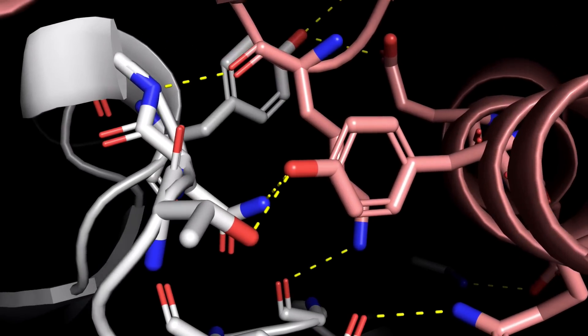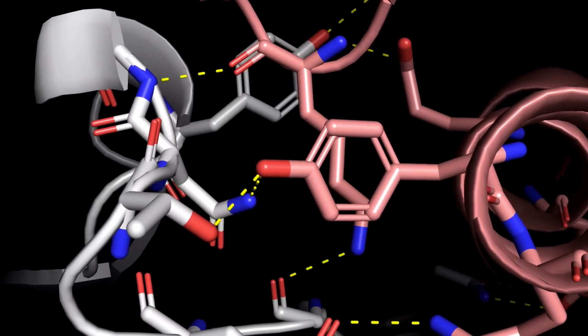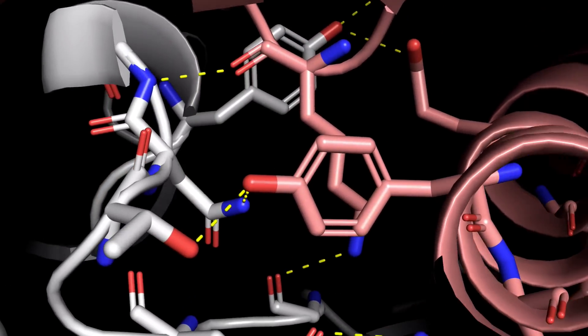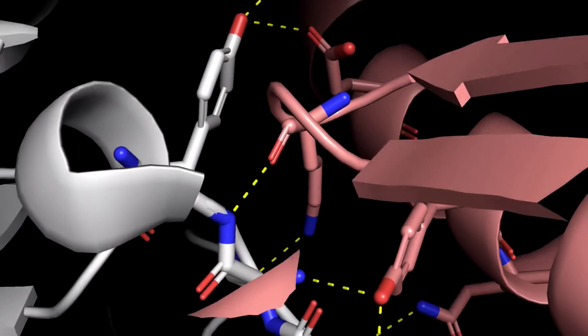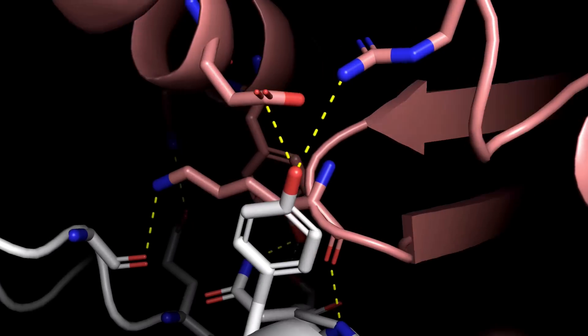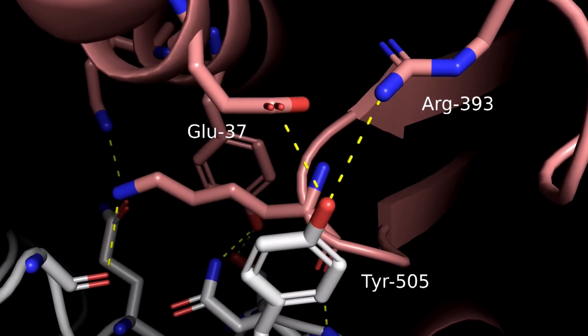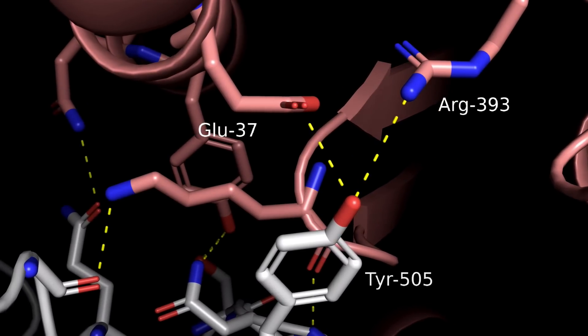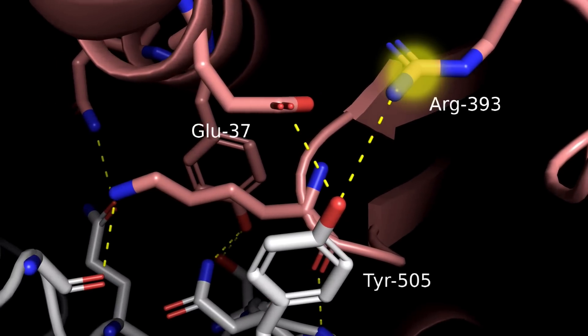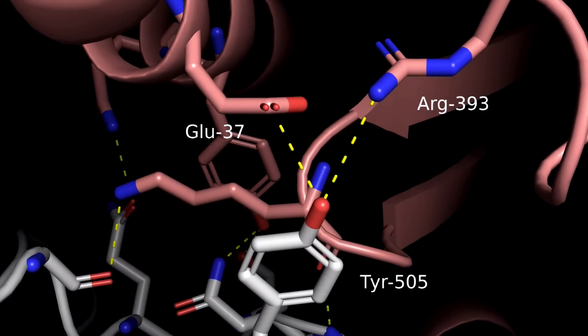In this region, we have extensive hydrogen bonding. We see some between amino acid backbone atoms and some additional hydrogen bonds among polar and charged residues, like the hydrogen bonds of this tyrosine with a negatively charged glutamate side chain and a positively charged arginine side chain.